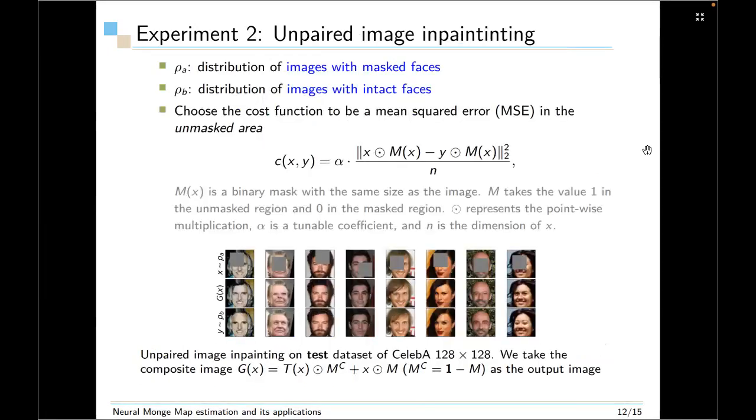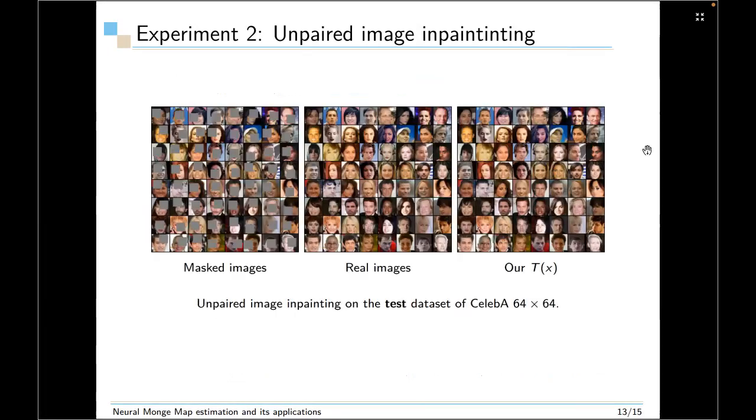Next is an unpaired image inpainting task. It also doesn't require paired data. And for this task, the source distribution is images with masked faces and the target distribution is with intact faces. And we choose the cost function to be mean squared error in the unmasked area. So this means the push forward map has to keep the unmasked area intact. And you can see that in the bottom, we show the Celebrity 128 times 128 images on the test dataset, which is unseen during the training. We take the composite image as the output image and these look quite realistic. These are the results on a test dataset of Celebrity 64 times 64, and they are also quite realistic.